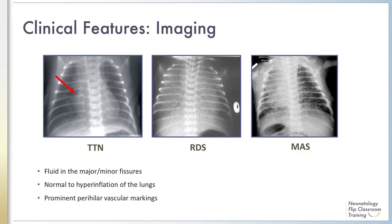A chest x-ray is a useful tool to rule in or rule out TTN. There are distinct findings on chest x-rays that indicate TTN versus respiratory distress syndrome, meconium aspiration, sepsis, pneumonia, or pneumothorax. The x-ray to the far left demonstrates the classic findings in TTN — indicated by the red arrow, you see fluid in the major fissure and normal to slightly hyperinflated lungs.